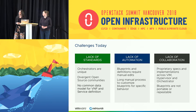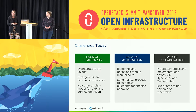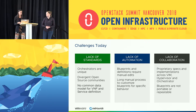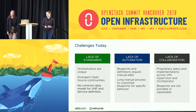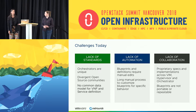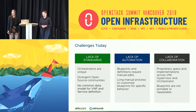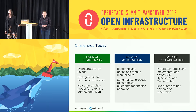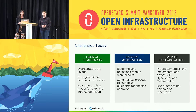These challenges today can kind of fit within three different verticals: a lack of standards, a lack of automation, and a lack of collaboration. Within the standards bucket, all the orchestrators are unique — we have service orchestrators, resource orchestrators, sometimes even orchestrators for orchestrators. We have all these divergent open source communities. We need to have more of a one-plus-one-equals-three environment developing, and there's no common data model for the VNFs and service definitions.